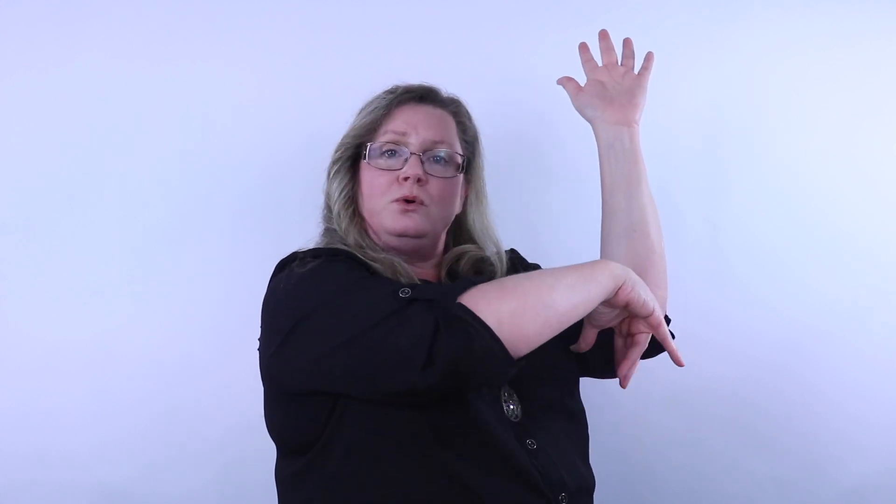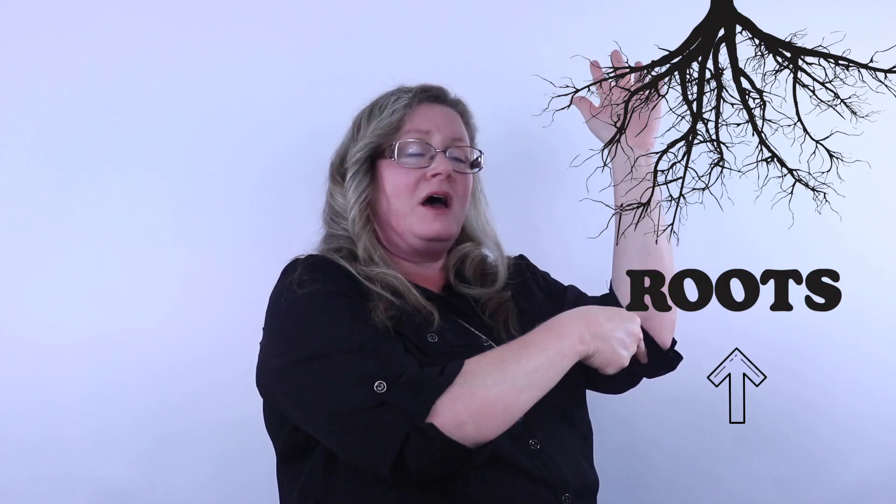The next part of the plant is called the stem. The very long stem helps the plant stand straight and tall, and it carries the water and the food up through the plant to help it grow. So that's the stem. Let's say those two parts together: the roots and the stem.